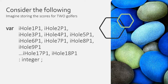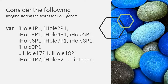If you've got two golfers, you need hole one for player one, hole two for player one, hole three for player one — that's 18 variables for player one. Then you need another 18 variables for player two, so that's 36 variables. The more golfers you've got, the more variables you'll have, making it very hard to keep track of and use them all.